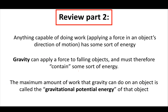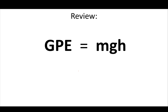We also learned that anything capable of doing work has some sort of energy to use. Gravity specifically can apply a force to falling objects and must therefore contain some sort of energy. The maximum amount of work that gravity can do on an object is called that object's gravitational potential energy, and you got the formula because it was mgh.